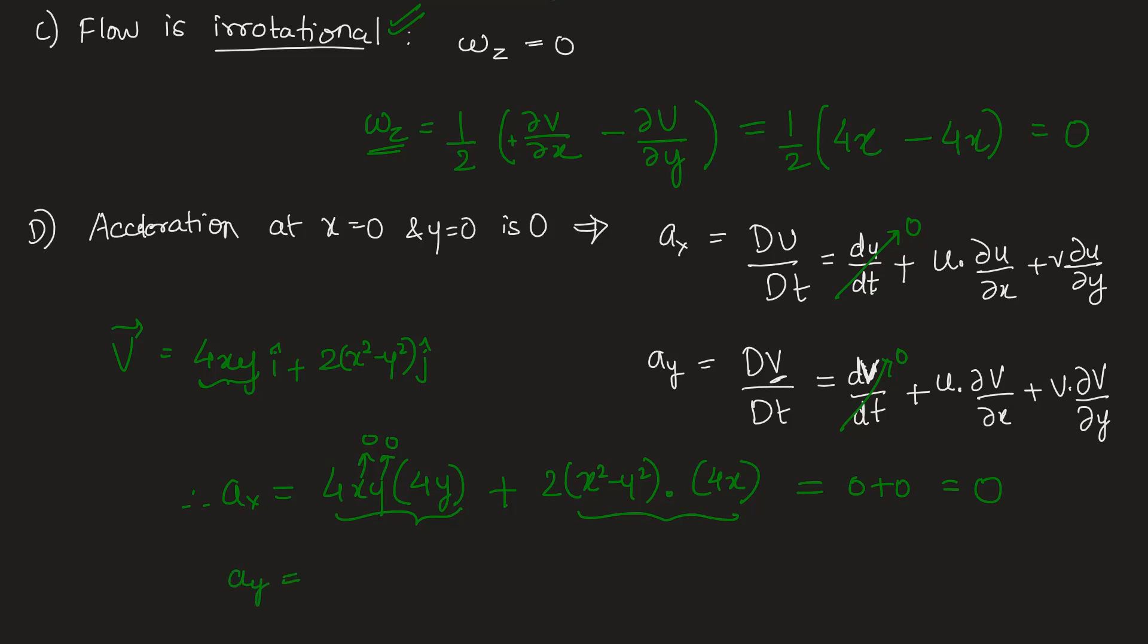What about acceleration in y direction? The same thing happens here—if you check, you will get this also as zero. Total acceleration is the resultant of these two acceleration values, so it's the square root of Ax squared plus Ay squared. Therefore acceleration is zero at x equal to zero and y equal to zero. Let's go back and mark these options.